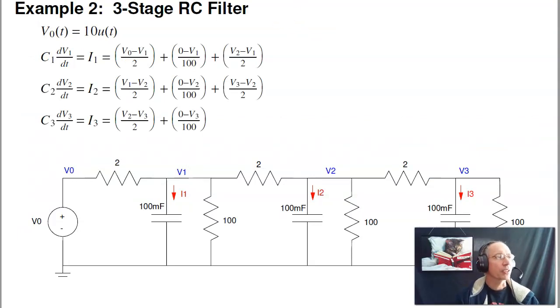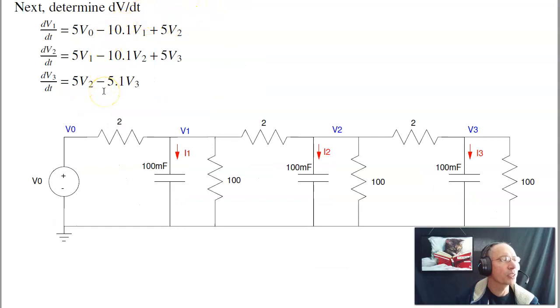More complicated circuit. Let's look at trying to solve a three-stage RC filter. In this case, I just write, what is the current I1, I2, I3? I1 is the current from the left, V0 minus V1 over 2, plus this current, 0 minus V1 over 100, plus the current from the right, V2 minus V1 over 2. That's equal to I1, which is CdV/dt. Likewise for V2, likewise for I3. Divide by C, and I get the differential equations for V1, V2, V3. So these are the differential equations I want to solve.